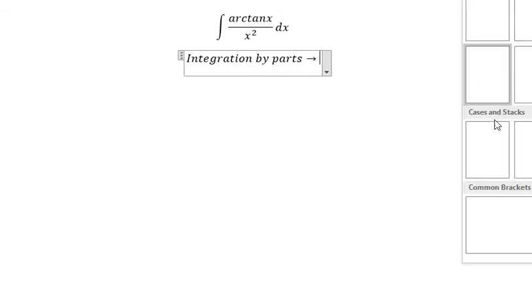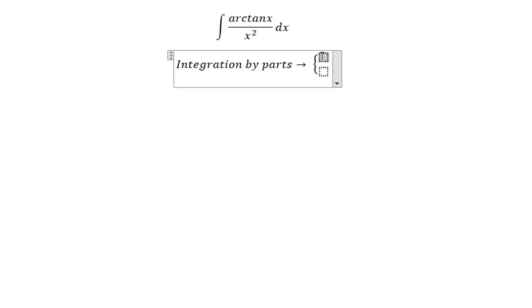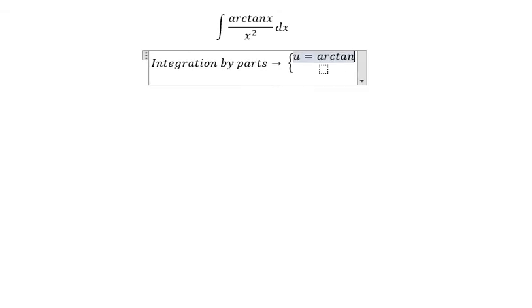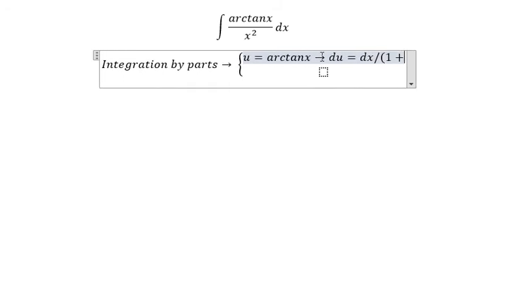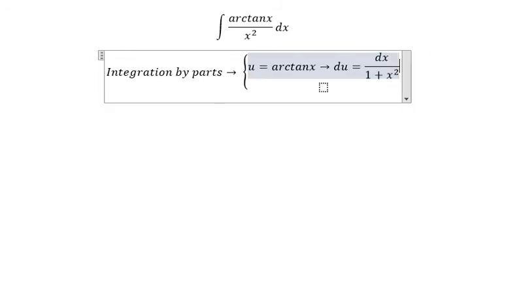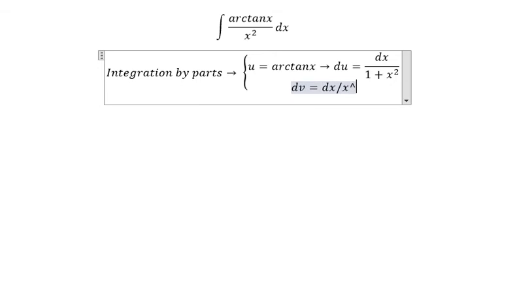So we have u equal to arctan of x. For du, you get dx over 1 plus x square. For dv, we get dx over x square.